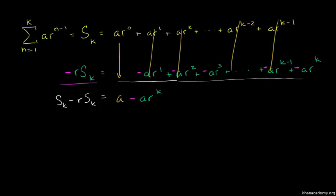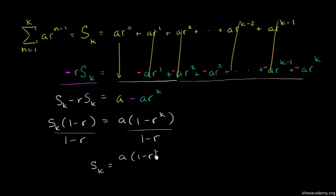We factor: S sub k times 1 minus r equals a times 1 minus r to the power k. So S sub k equals a times 1 minus r to the power k over 1 minus r. This is the formula.